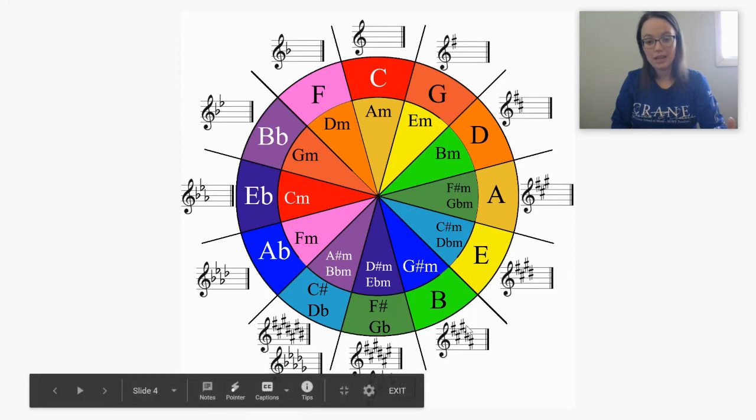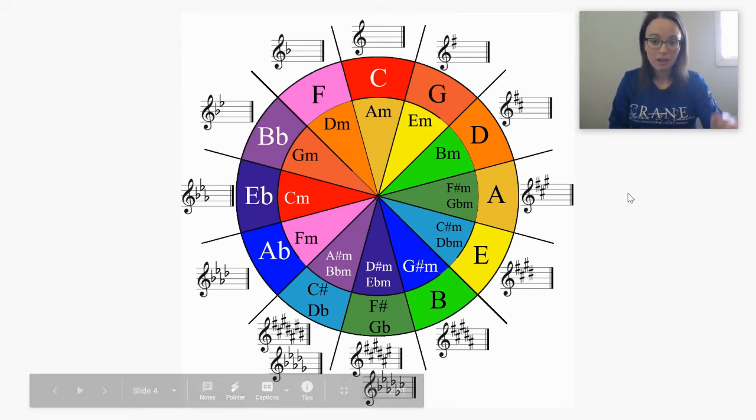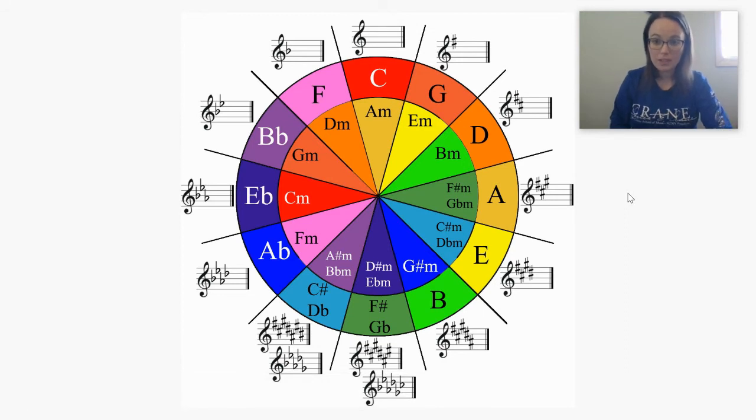And it does follow that order of sharps that we already learned: F, C, G, D, A, E, B. So you can use that order of sharps that we've already learned to help you figure out the key signature.